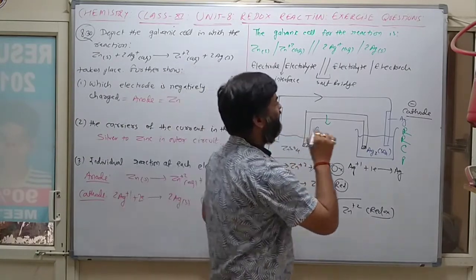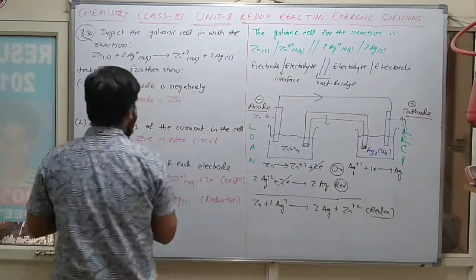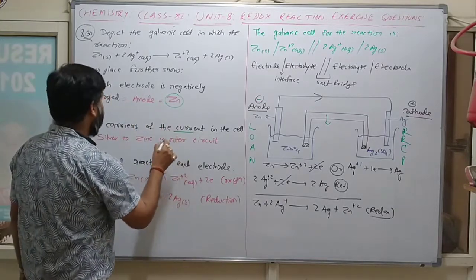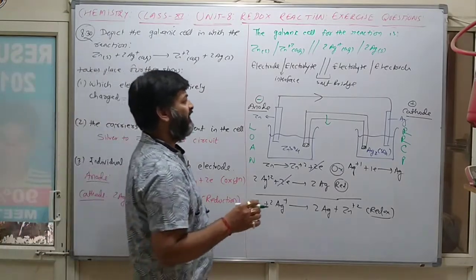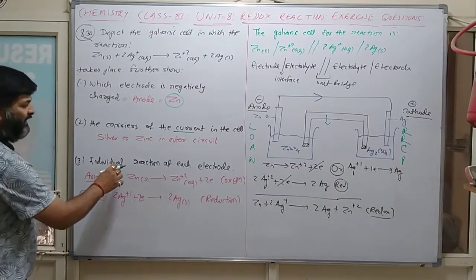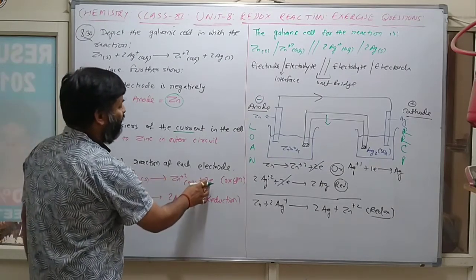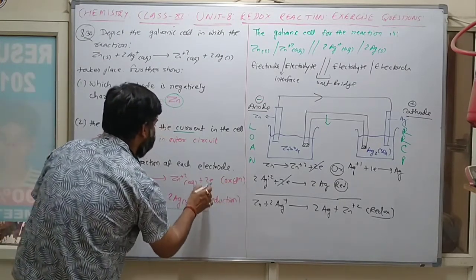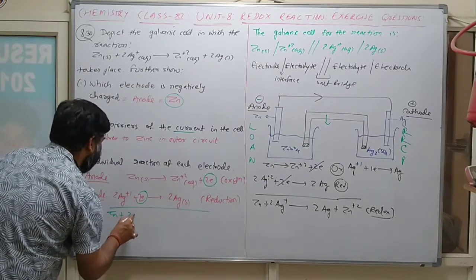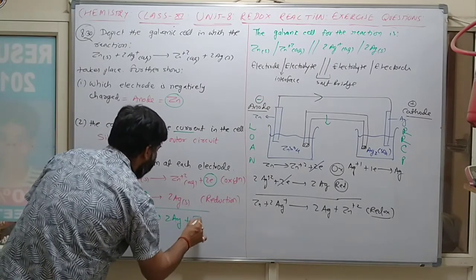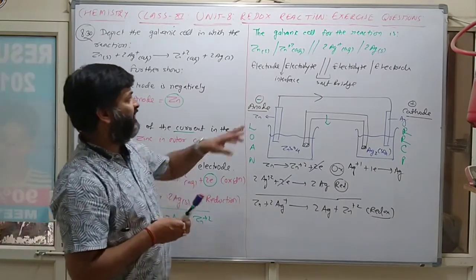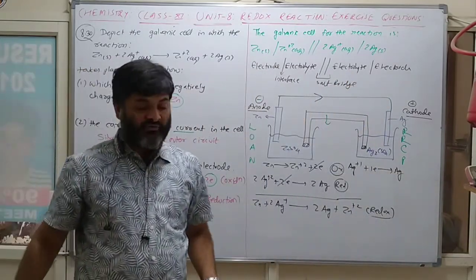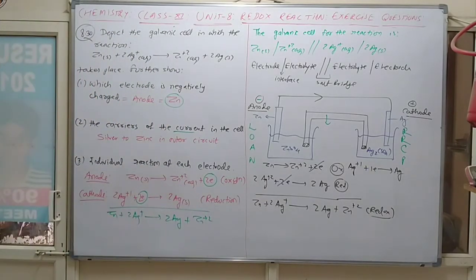The negatively charged electrode is the cathode (zinc side is anode, silver side is cathode). Current flows from silver to zinc in the outer circuit. Anode reaction: Zn → Zn²⁺ + 2e⁻ (oxidation). Cathode reaction: Ag⁺ + e⁻ → Ag (reduction). The overall reaction is: Zn + 2Ag⁺ → Zn²⁺ + 2Ag.